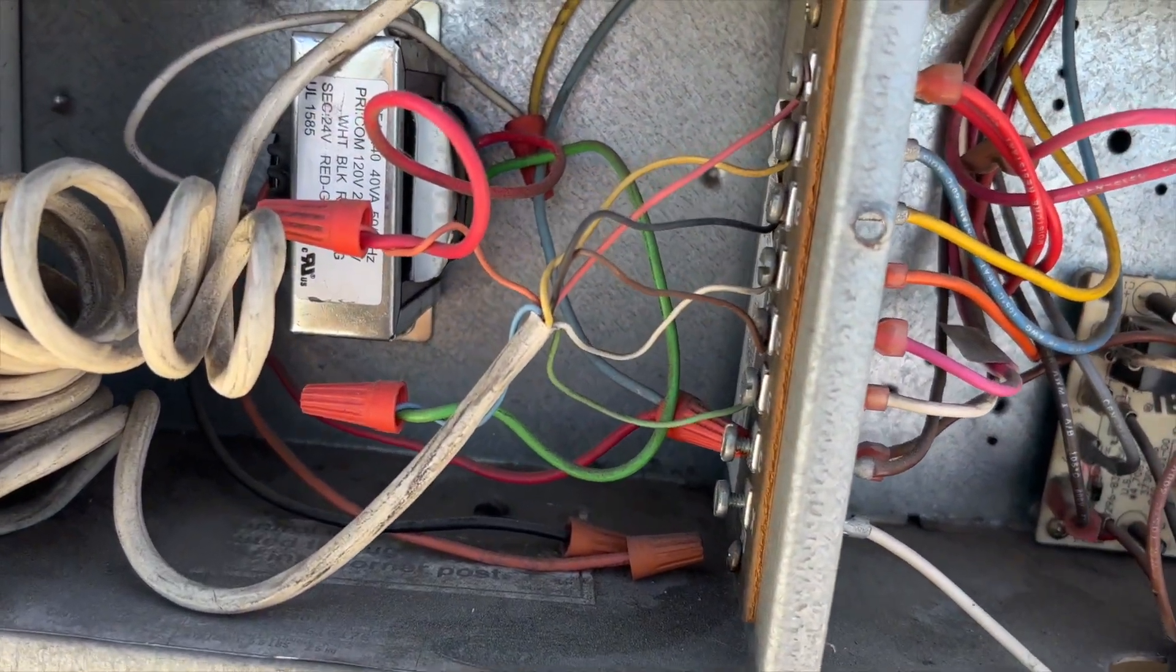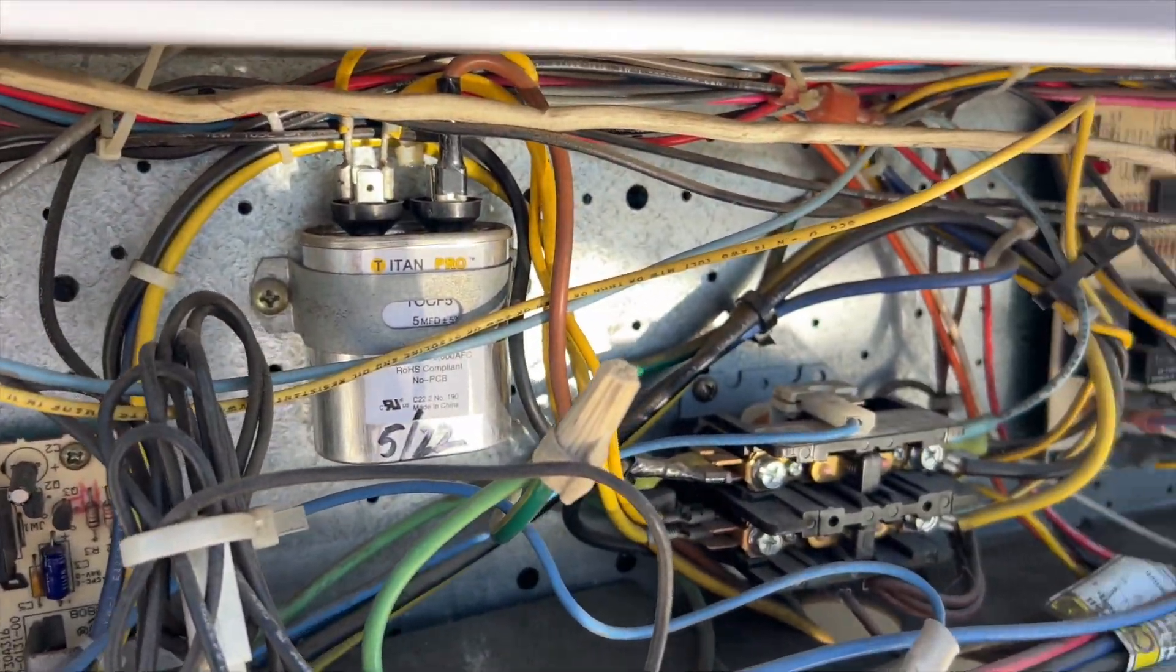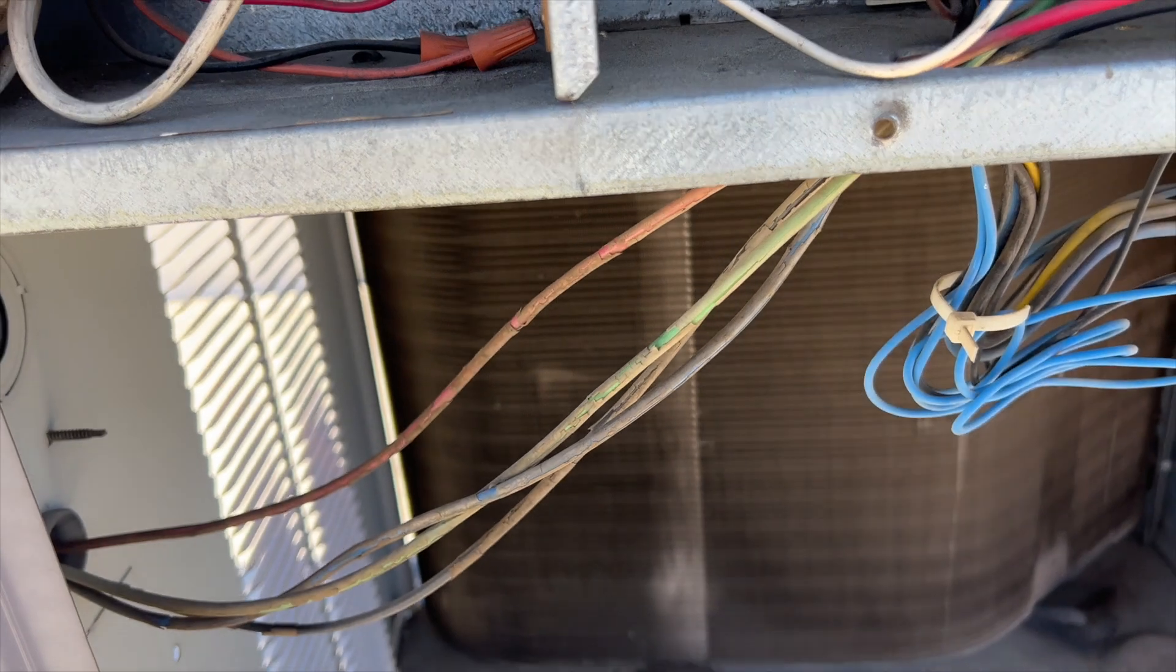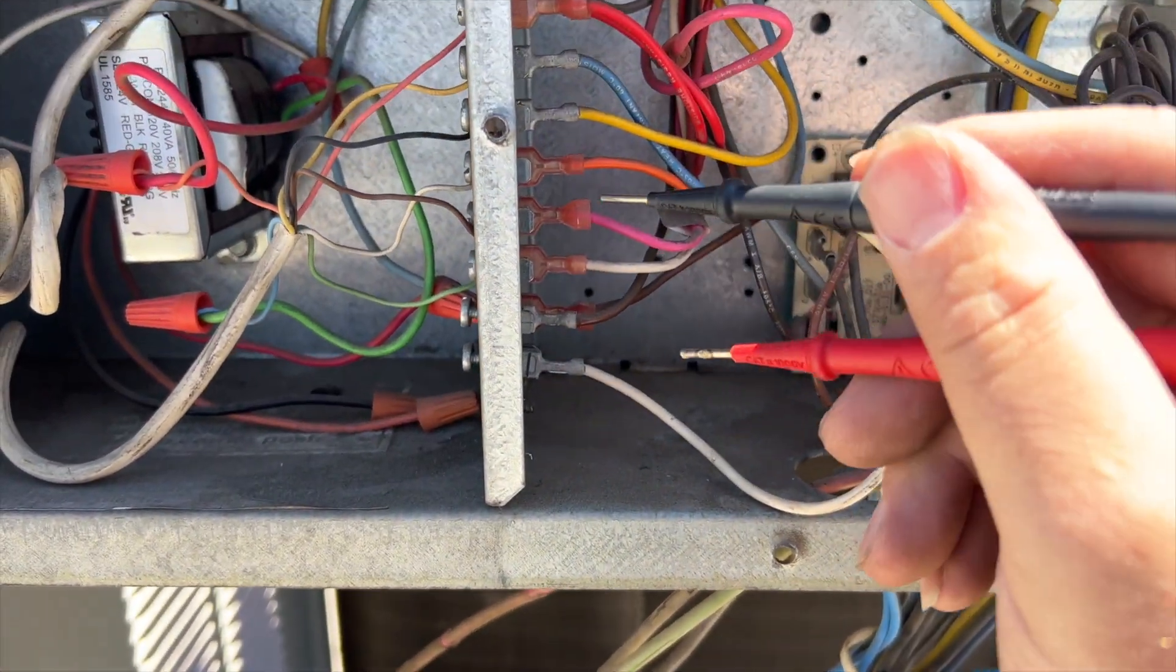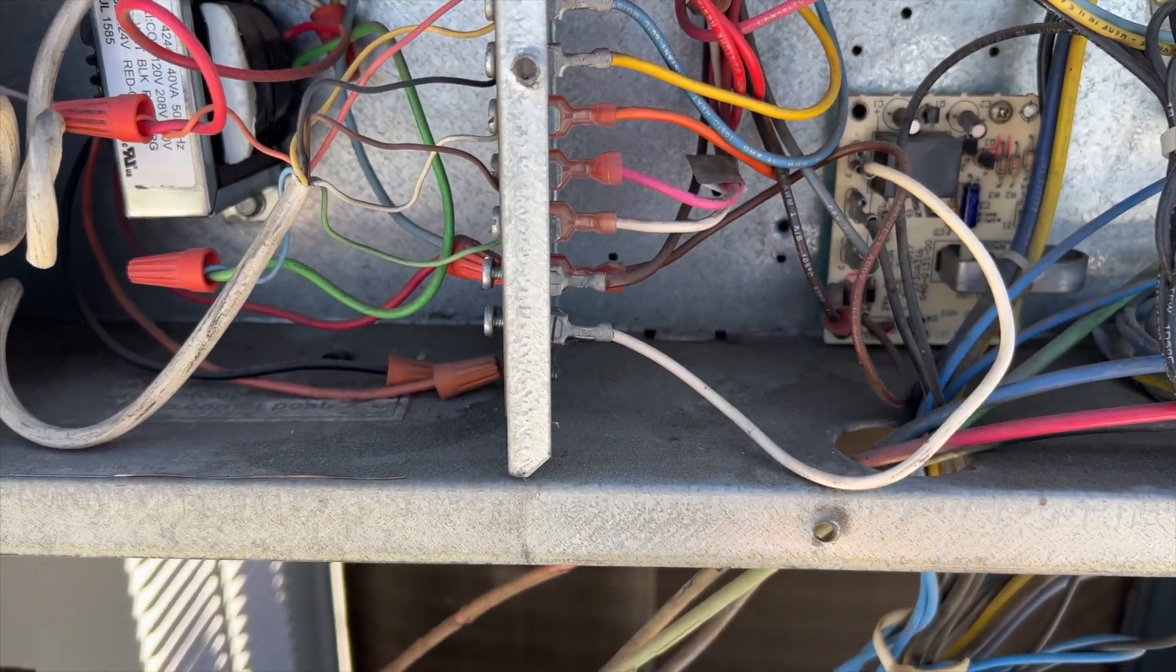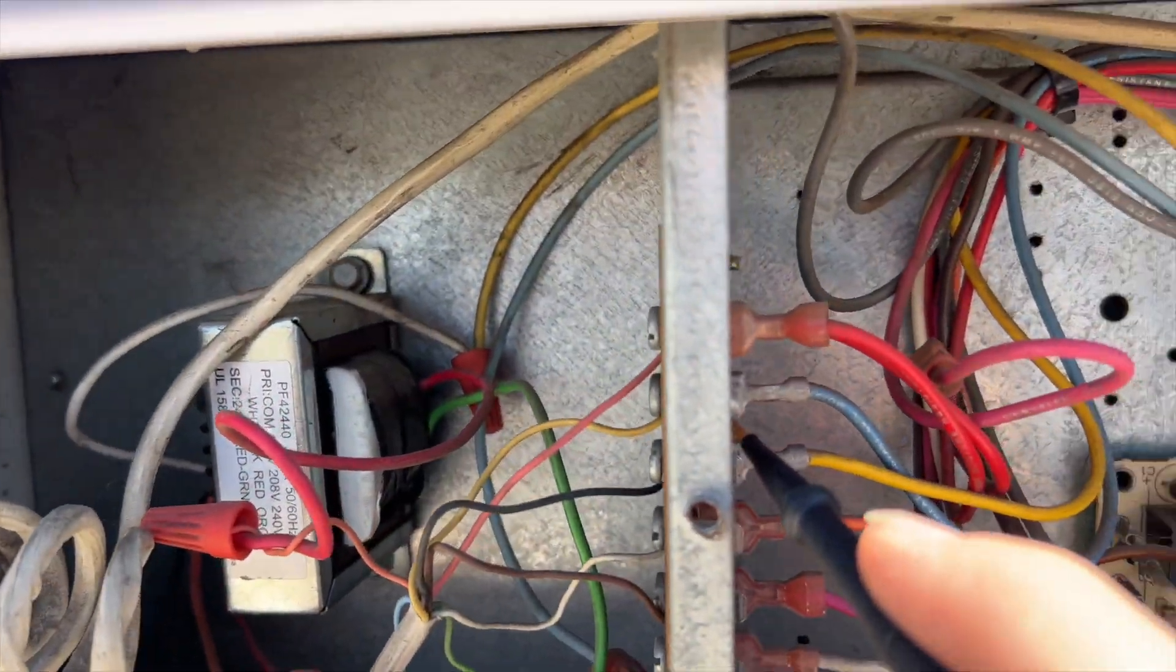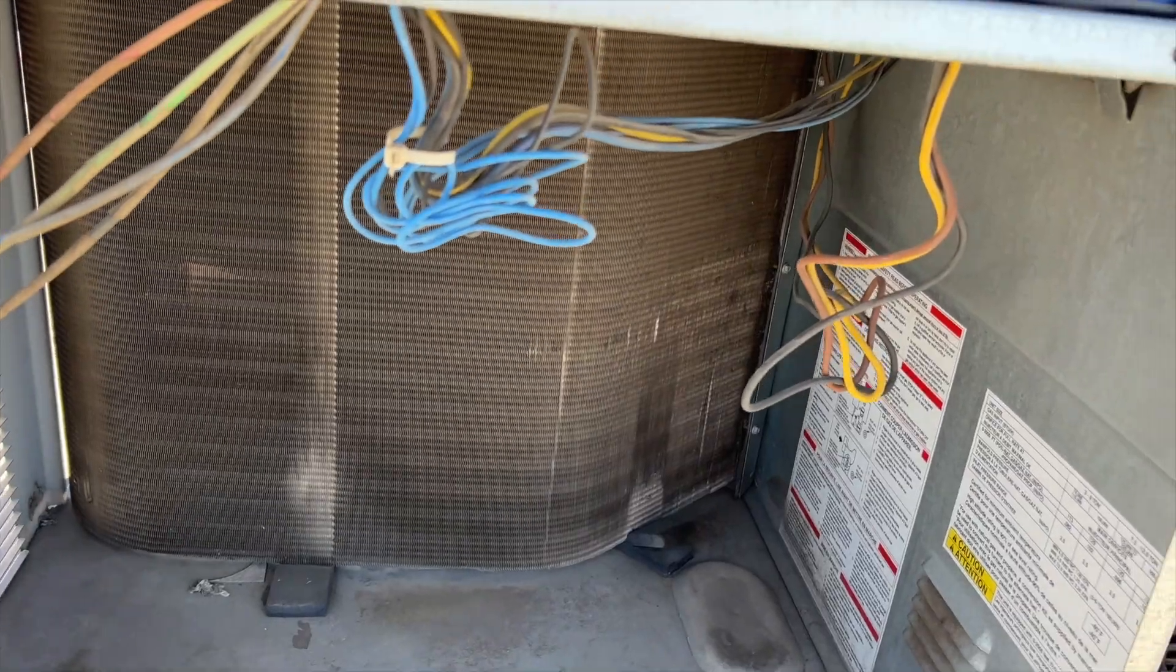We're back on the roof, everything's running, the blower's on now. This is one of those Carriers which requires a call for G as well as Y because they got all these circuit boards but they can't make it turn on automatically. That's just too much to ask, so annoying. But anyway, you can see here if we go from G to C we have 24 volts, and then if we go Y1 to C we have 24. So the thermostat's actually calling for G and Y.